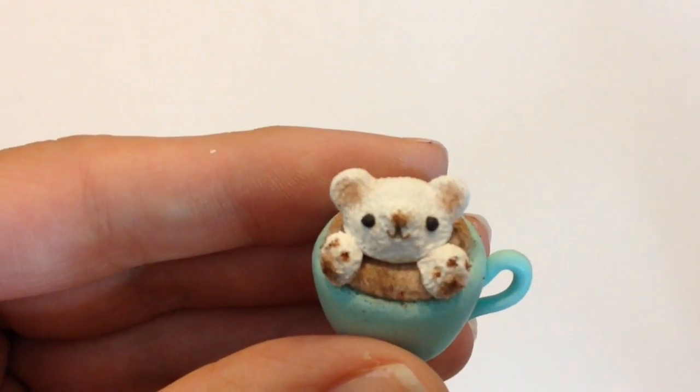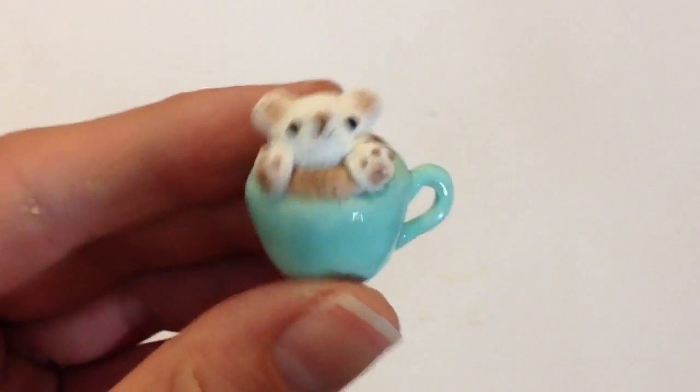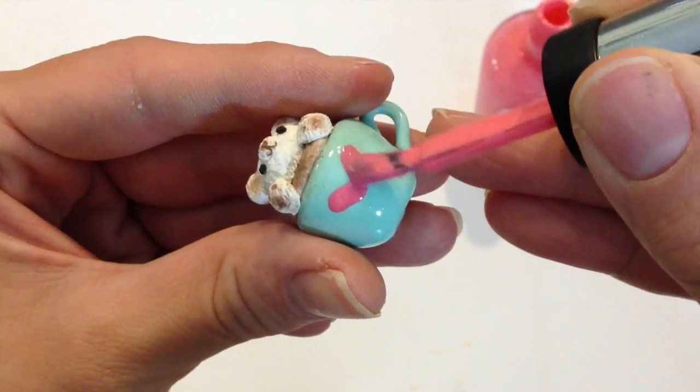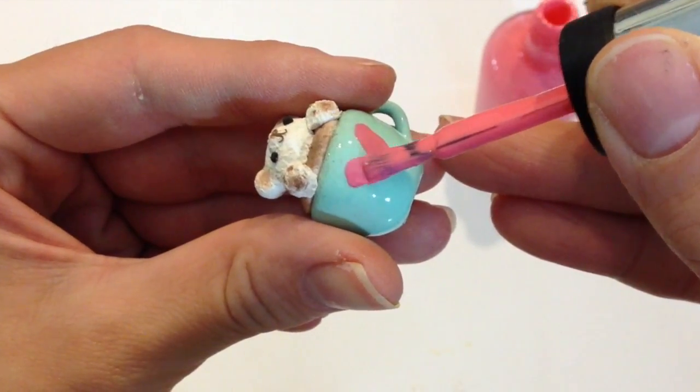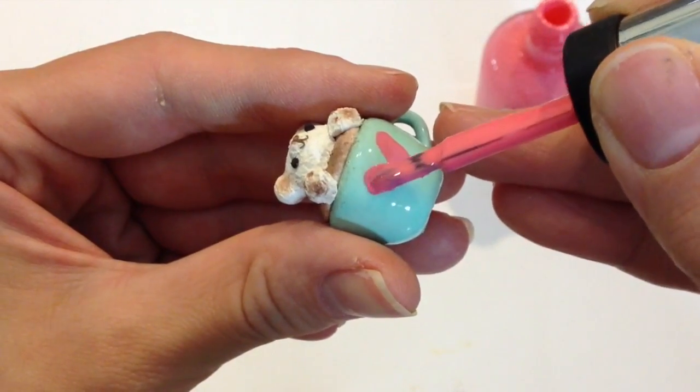Go ahead and bake your character in the oven, and make sure you glaze the cup so it's nice and shiny. I added an extra heart on the center of my cup with some pink nail polish, but that's completely optional.